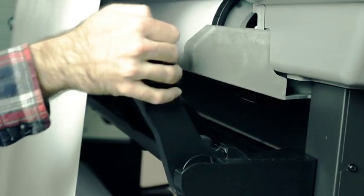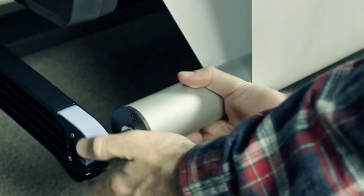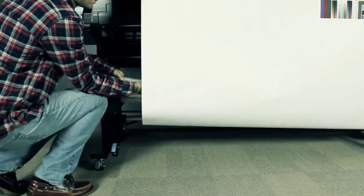For easier access to the take-up reel, lift the loading table into its upright position. To remove the tension bar, first lift the support, then press the lever. Remove the tension bar.